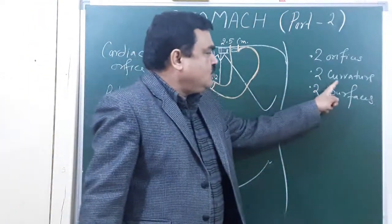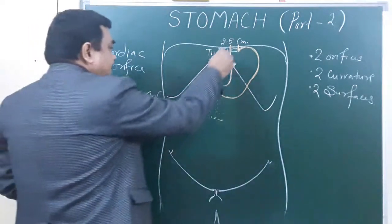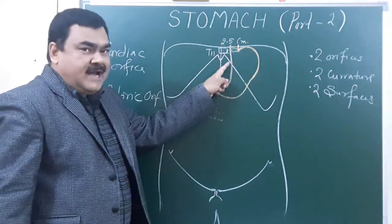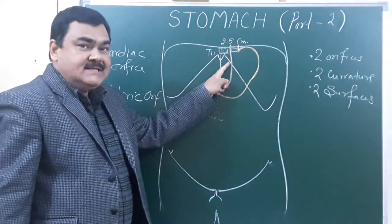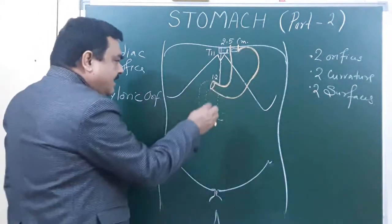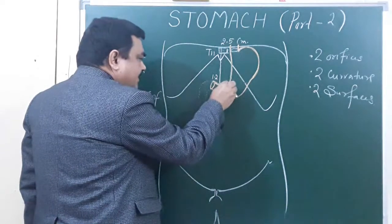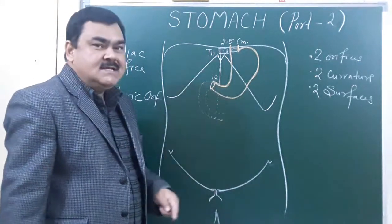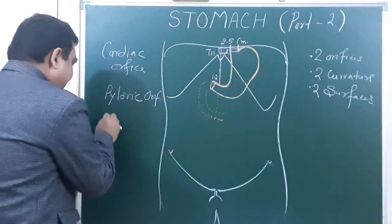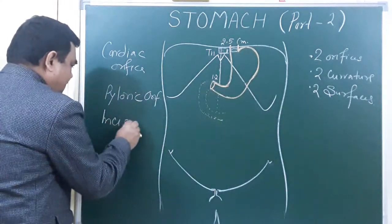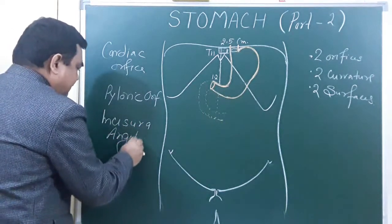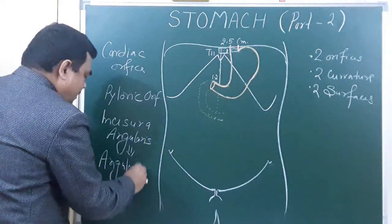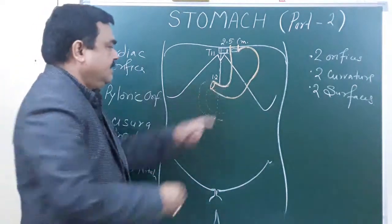There are two curvatures. The lesser curvature forms the right border of the stomach, and the lesser omentum is attached here. At the lower end, an angulation is present known as the incisura angularis, also called the angular notch.